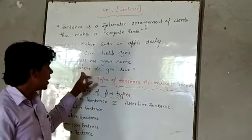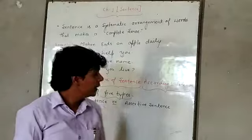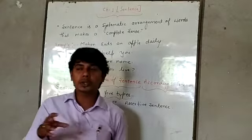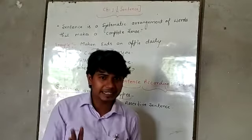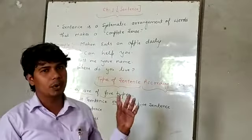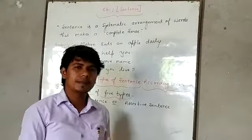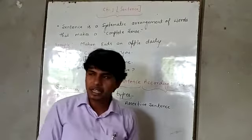And the last one: 'Where do you live?' — this is also a sentence. These four examples belong to different types of sentences. I hope you have understood the definition of the sentence.